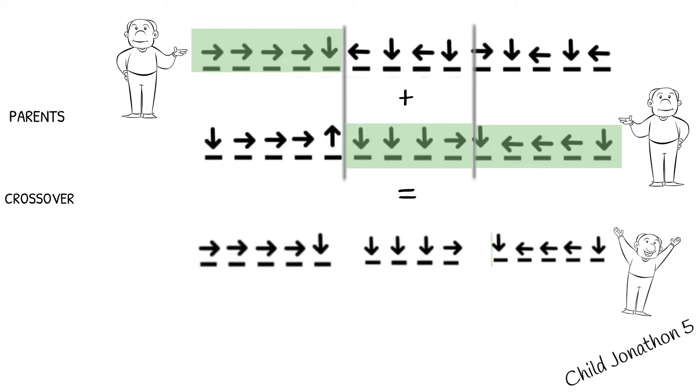Great. But we're not quite finished with the child Jonathans. We still need to mutate some of their genes. Why? Because otherwise we can get stuck in local minima.